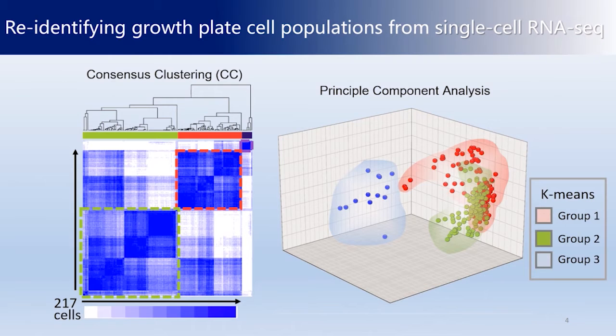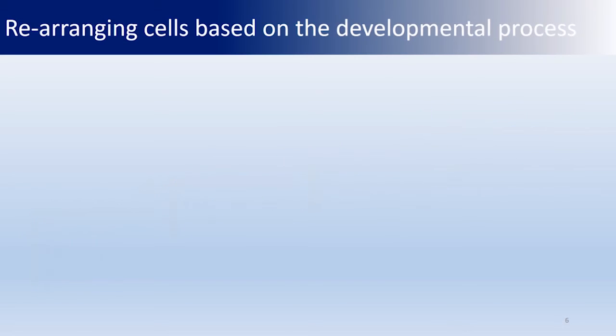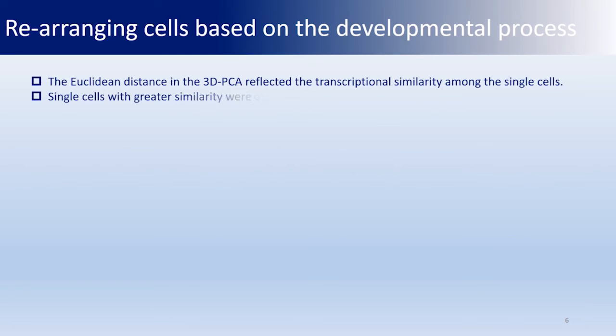We next tried to reconstruct the growth plate development by rearranging the single cells that lost their temporal and spatial information during single-cell sampling. Single cells were projected into three-dimensional PCA space, whereby the Euclidean distance in the 3D PCA reflects the transcriptional similarity among the single cells. The assumption was that single cells with greater similarity were at mutually closer stages of the differentiation process.